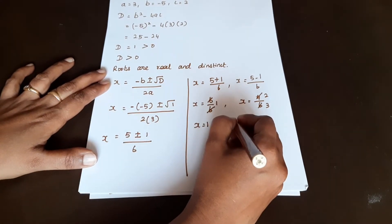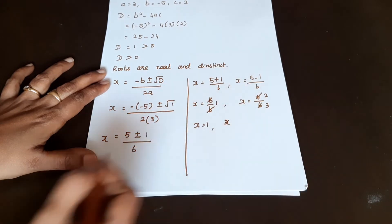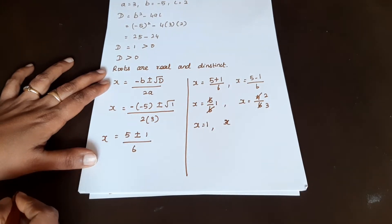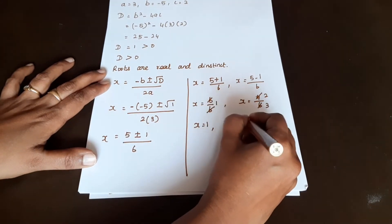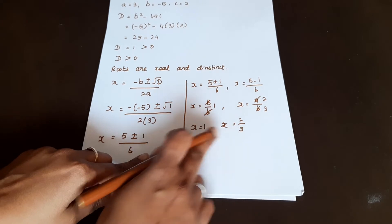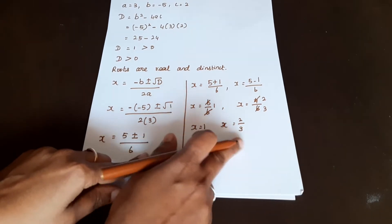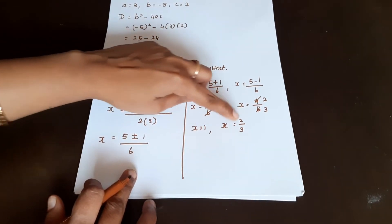Since D is greater than 0, we have two real and distinct roots. x is equal to 2 by 3.